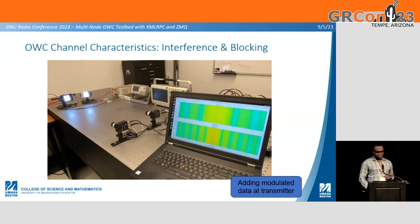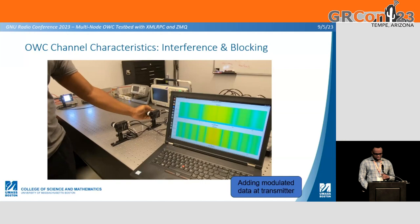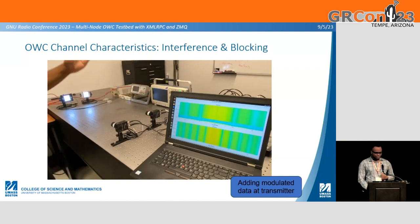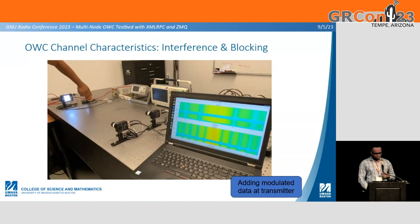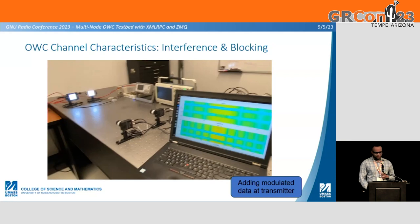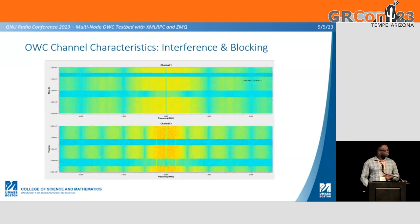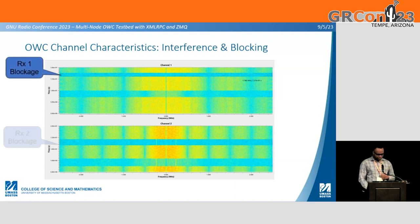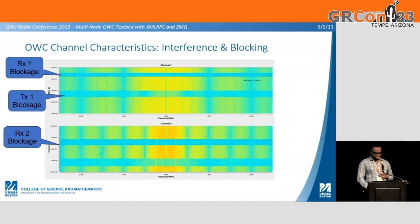In the next demo, we're adding modulated data at the transmitter. When we block RX1, we see the drop off in the waterfall plot. We block RX2 — again we see the drop off. Once we cover TX1, we see the drop off but still observe the interference at RX1. We see the same interference pattern for RX2. In a more zoomed-in view of the waterfall plot, we observe RX1 blockage drop off, RX2 blockage, TX1 blockage, with the interference pattern still present in between. We see TX2 blockage — and again the interference pattern.